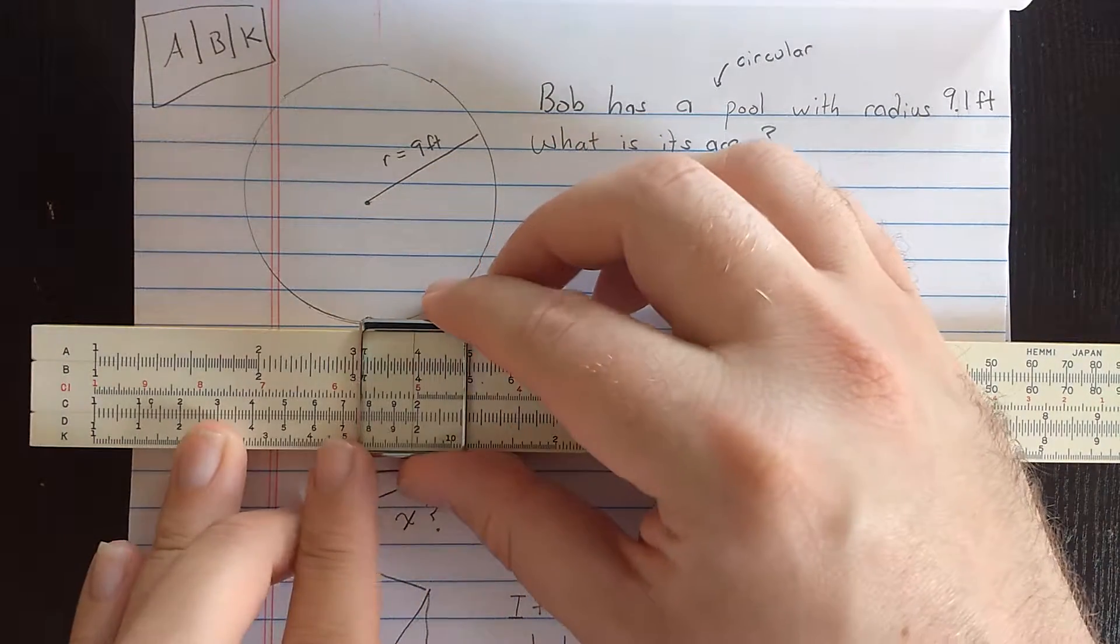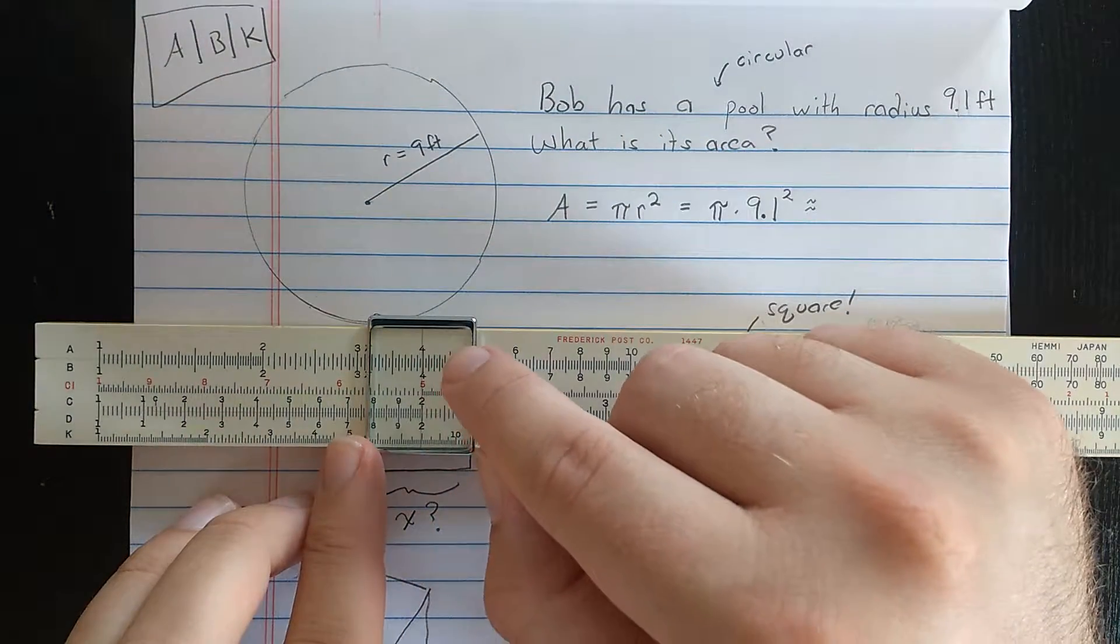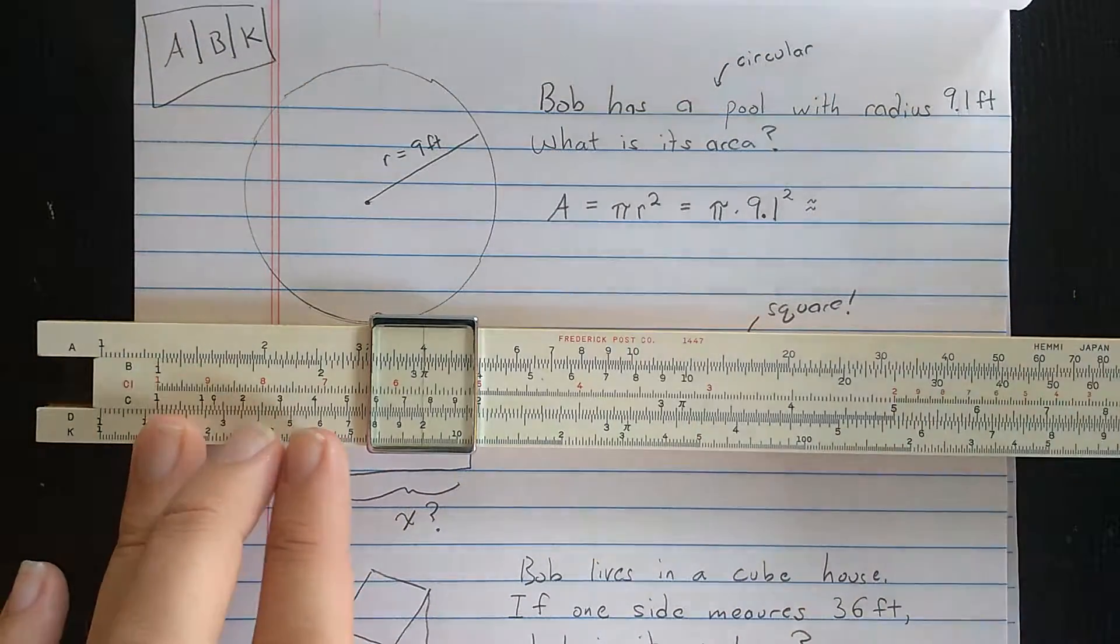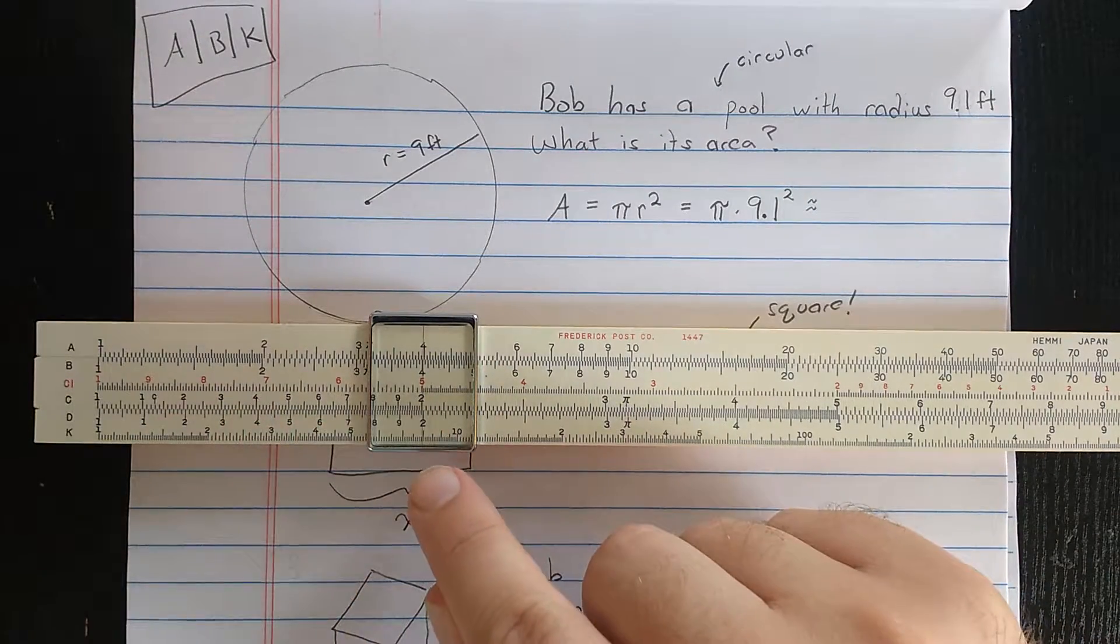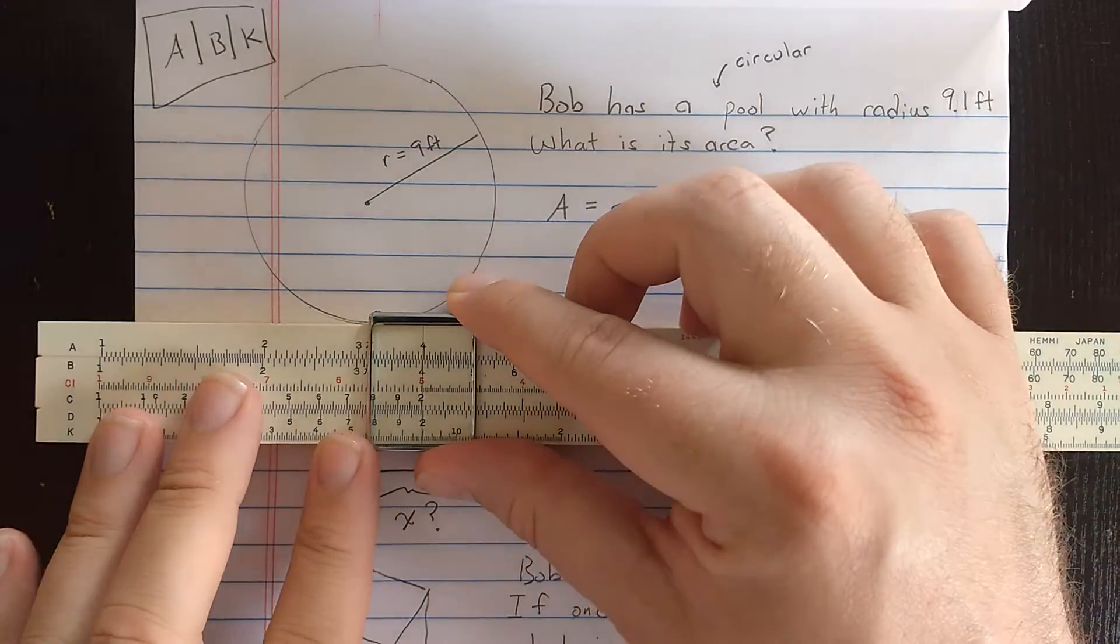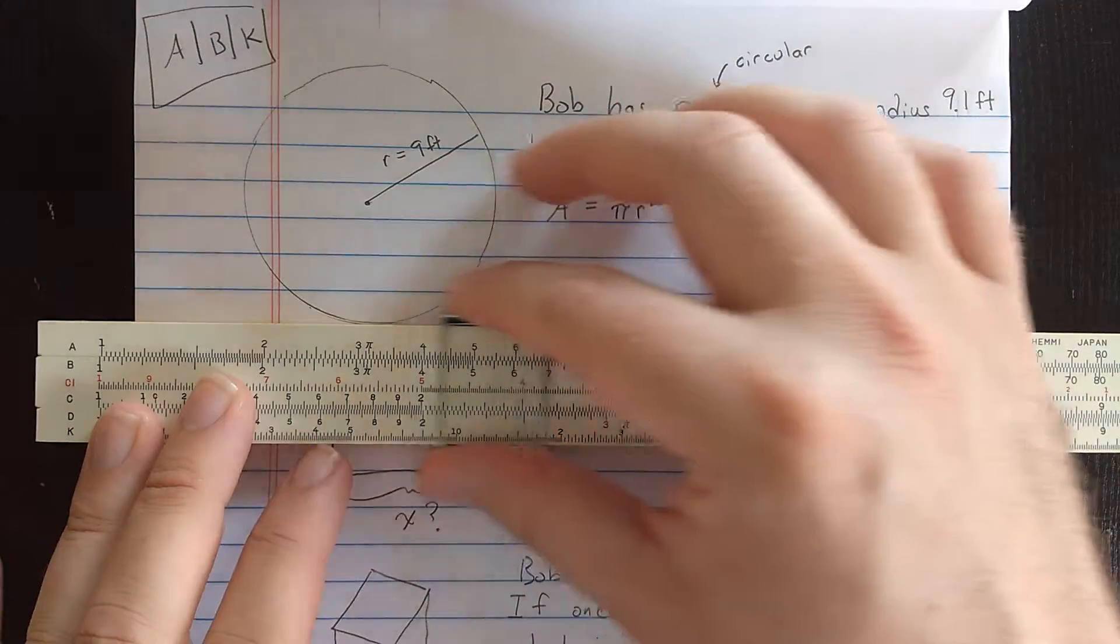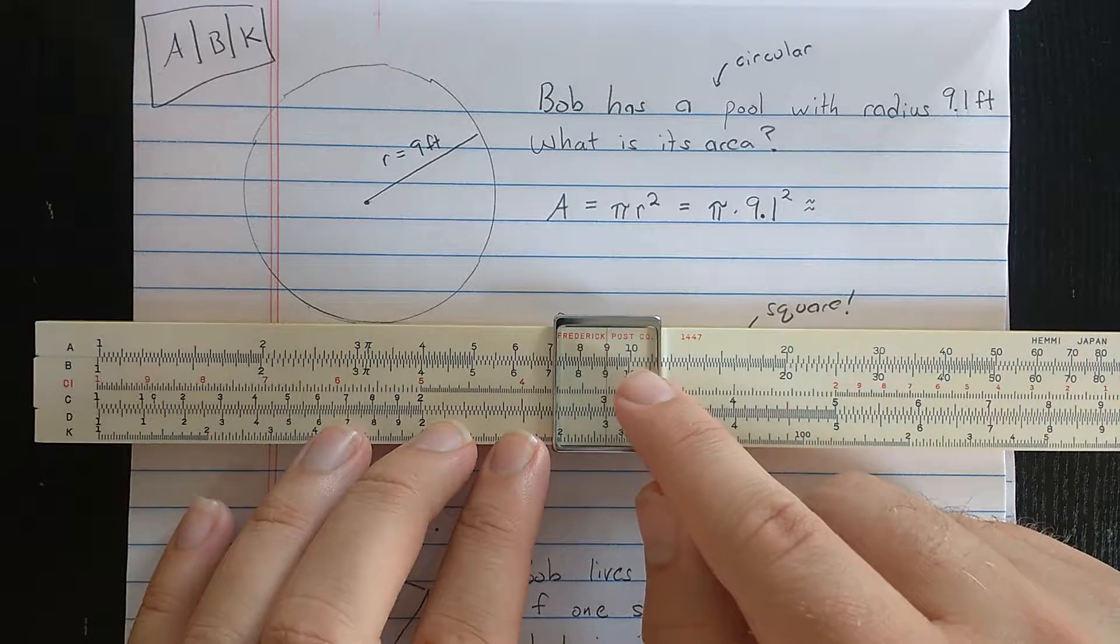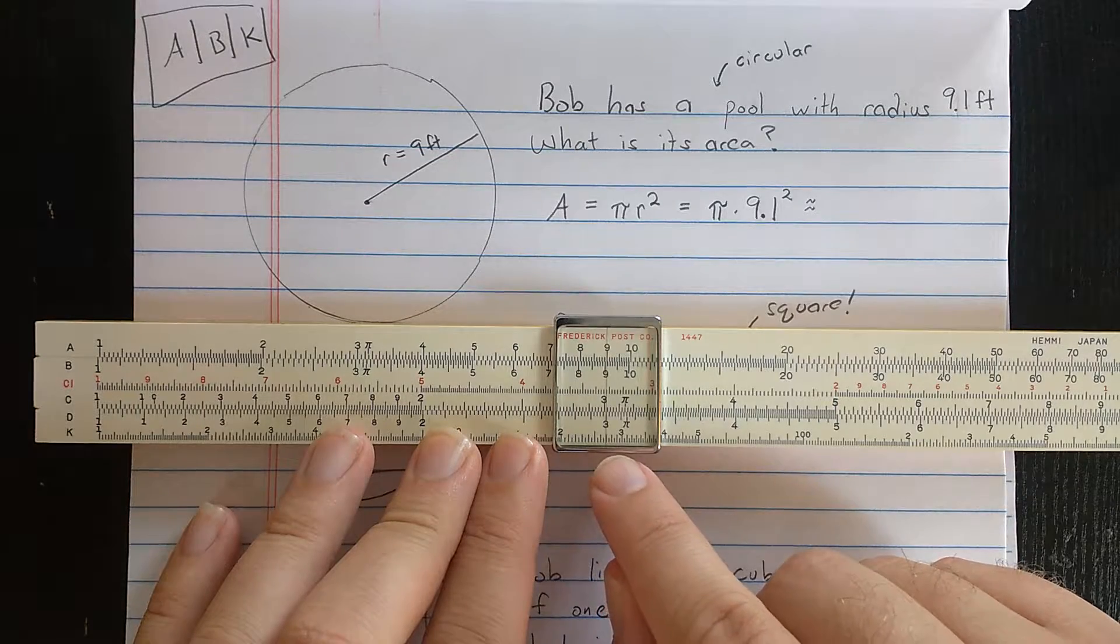For example, if I set 2 on the D scale, then on the A or the B scale if it's a line, but just the A scale if it's not closed, I read 4. And then on the K scale, I should be reading 8 or 2 cubed. If I go to something like 3, then I'm reading 9 on the square scale, A. And on the K scale, I'm reading 27.